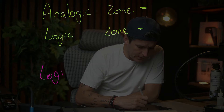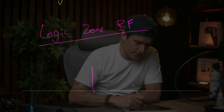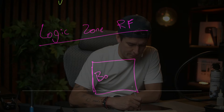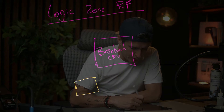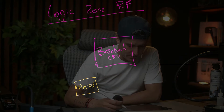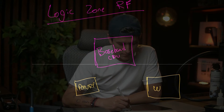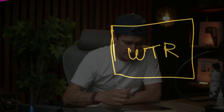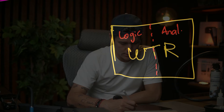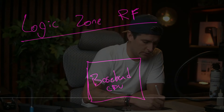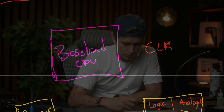The logic zone of RF — remember, we have one component which is our baseband, the baseband CPU. The baseband CPU needs power, so we are going to have the PMURF. We also need another component that we are going to call the WTR. This WTR has two parts: one logic and one analogic. Right now we are talking about the logic part.